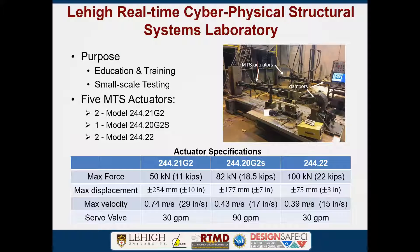We also have what I call a cyber physical structural systems lab. Our large actuators weigh about 13 kips each and are not readily moved, so we have a smaller system for education, training, pilot tests, and small-scale testing. There are five actuators with force capacity from 11 up to 22 kips, displacement from 3 up to 10 inches, and velocity from 15 to about 30 inches per second. One current setup has an active controlled friction damper that researchers are evaluating.